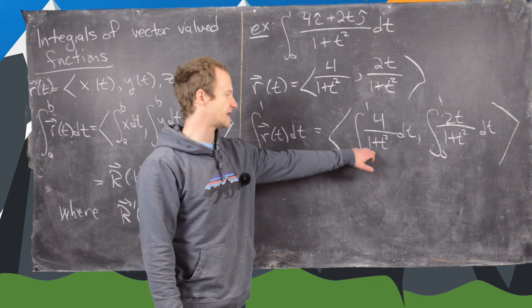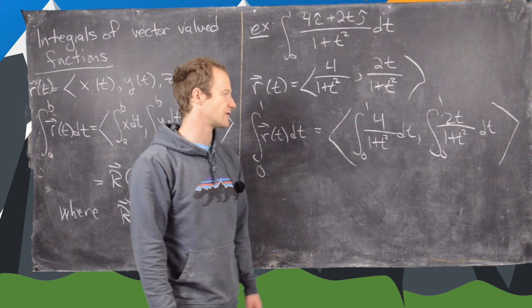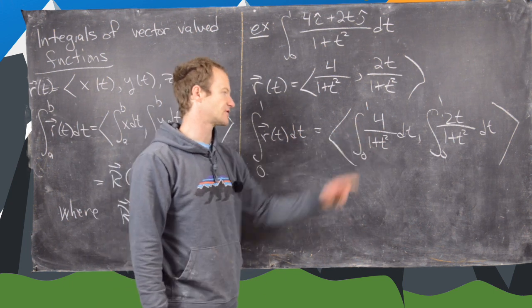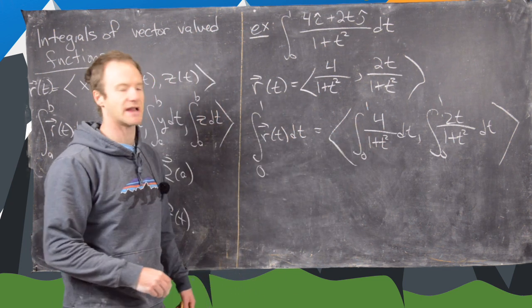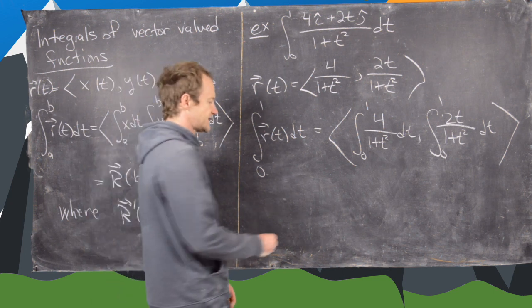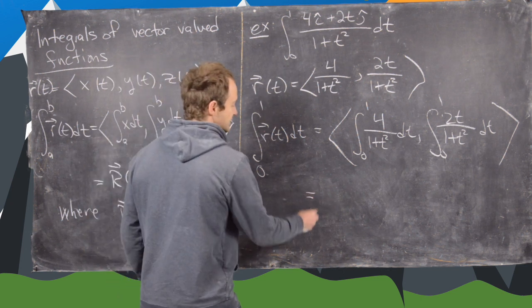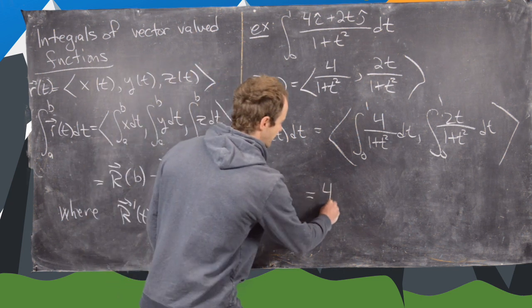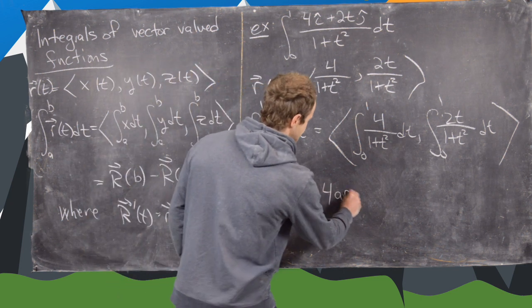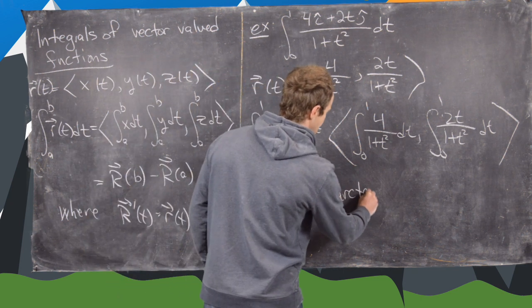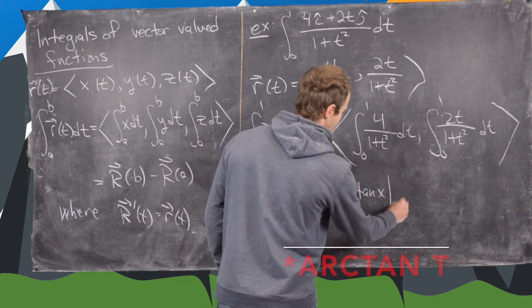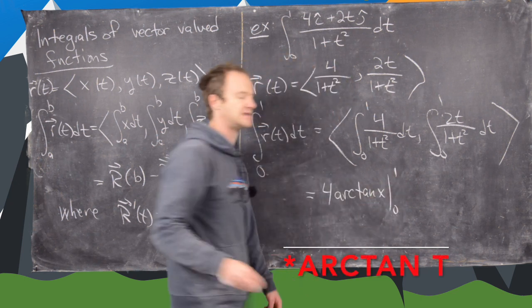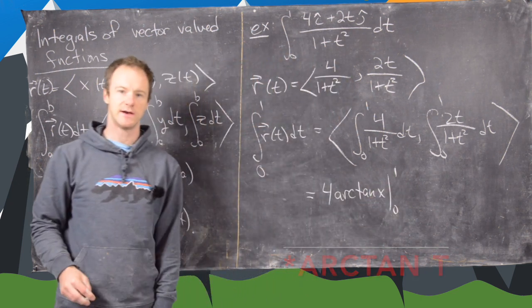For the first one we can take the antiderivative directly. The antiderivative of 1 over 1 plus t squared is the inverse tangent. So this gives us 4 times the arctan of t, evaluated from 0 to 1.